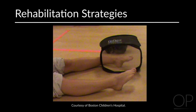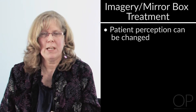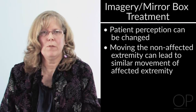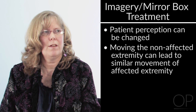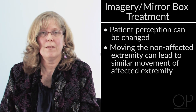Another rehabilitation strategy is using a mirror box. Many sites, including ours, are using imagery where the patient puts their affected arm or leg in a box so they can't see it, and on the other side is a mirror, and they move their affected extremity. They'll see that image in the mirror, which sends information to the brain. Studies are showing that we can actually change the perception, and I've seen patients who, just by moving their non-affected extremity, will start moving their affected extremity that's in the box.